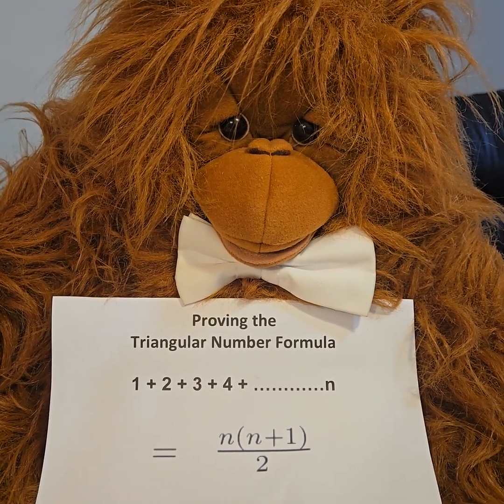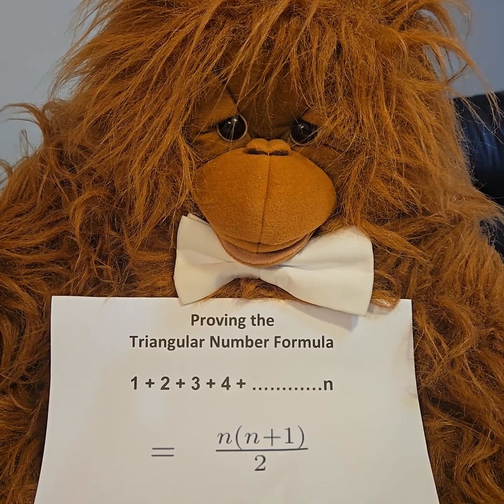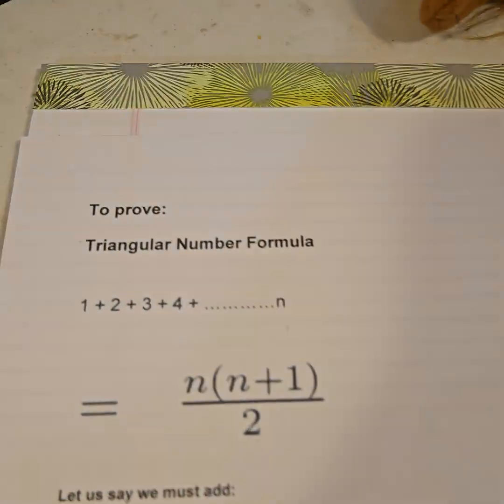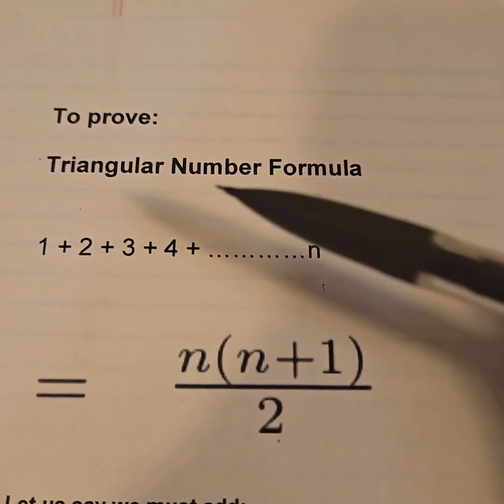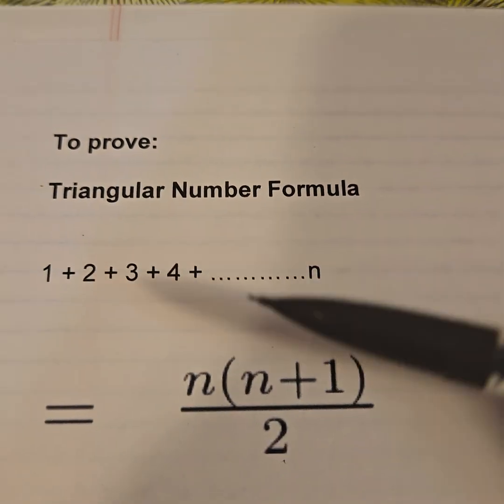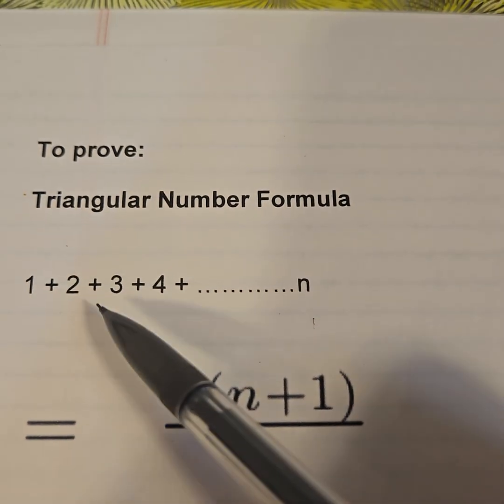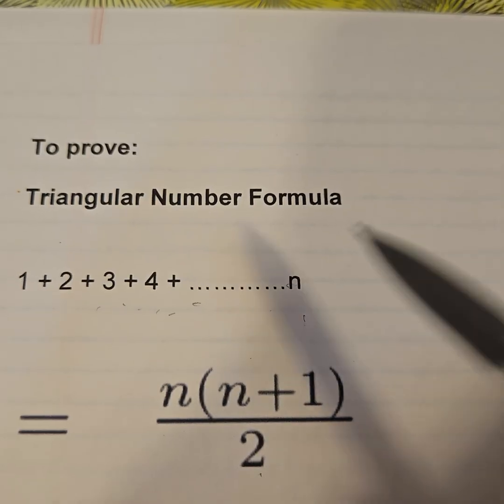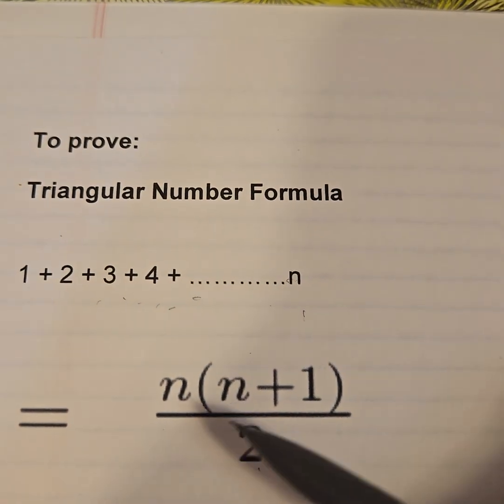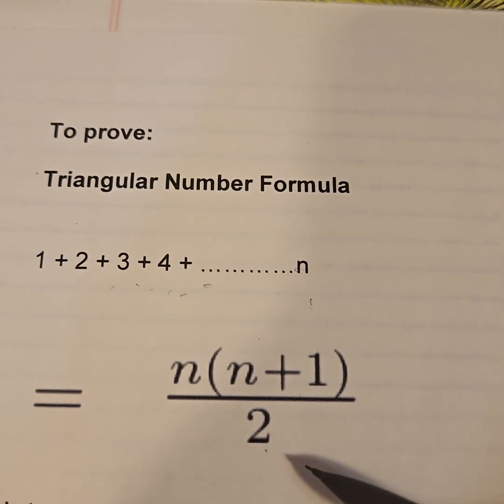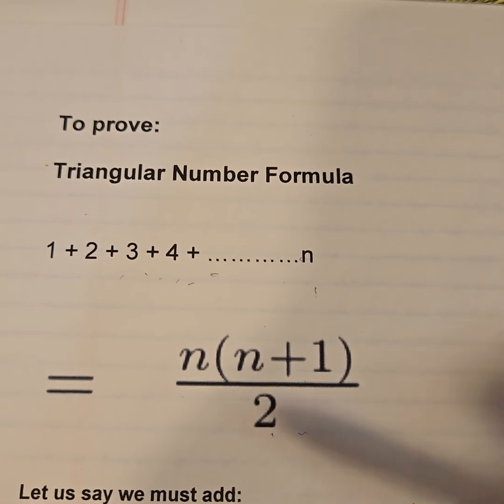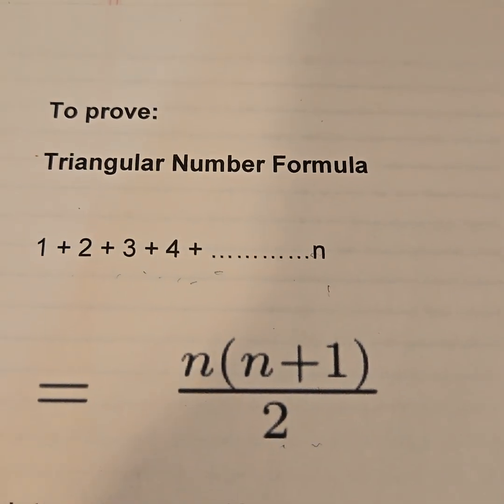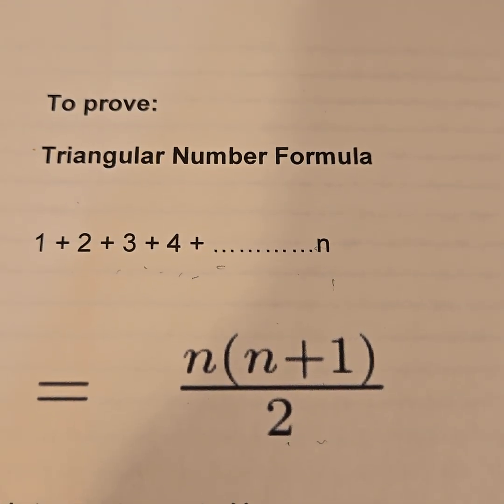Proving the triangular number formula. I made another YouTube where I introduced this formula, the fact that 1 + 2 + 3 + ... all the way until n equals n times (n+1) divided by 2. And I said I'll make another YouTube where I prove why it's true, and this is that YouTube, which is arguably part two.